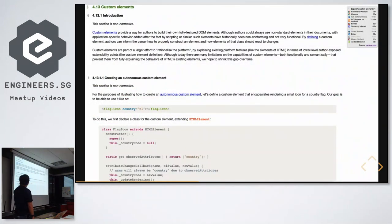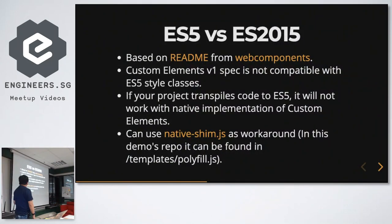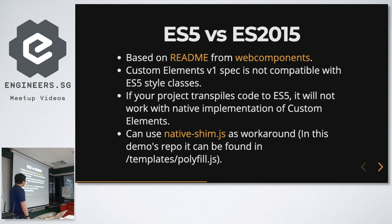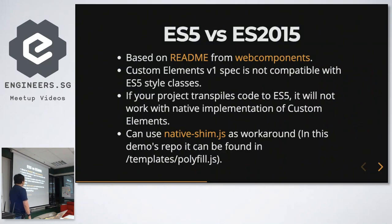You can also find the specs of web components under the WG website. While working on the demos for this talk, I realized there's a gotcha: the Custom Elements V1 spec is not compatible with ES5 style classes. Especially if you're using a bundler like Webpack together with Babel, you'd typically transpile down to ES5 — but that will give you issues because it's still not compatible with the V1 spec.